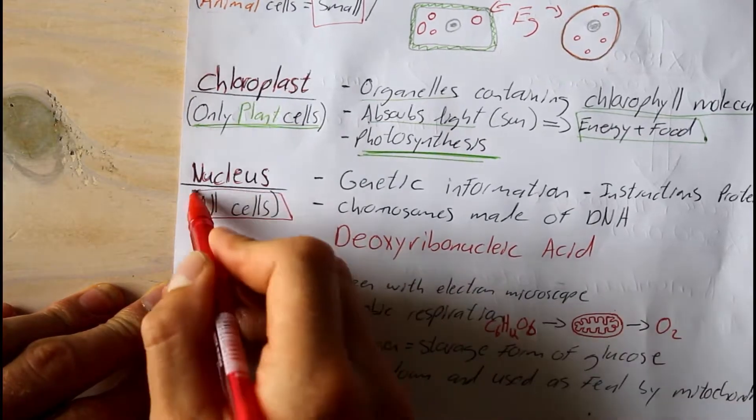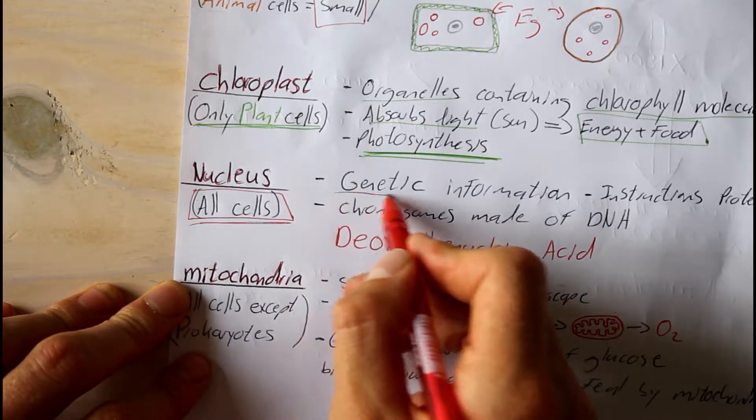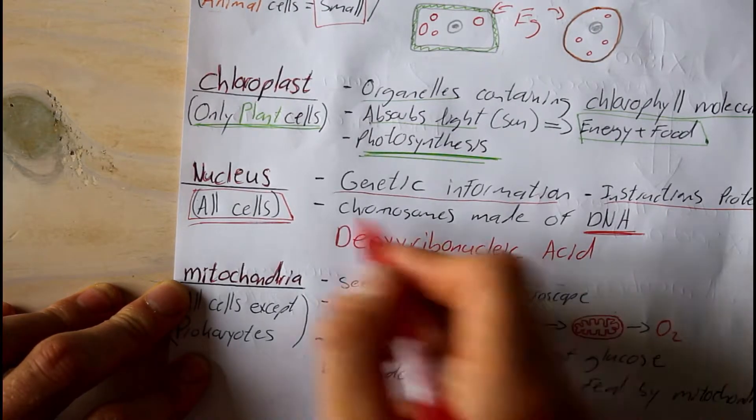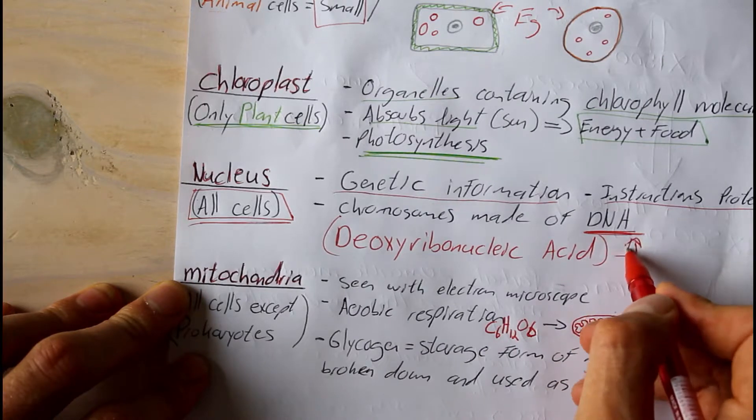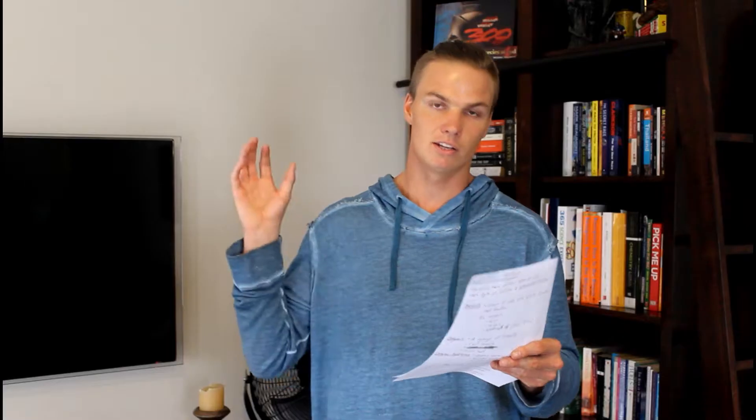One of the most important organelles in the cell is the nucleus. All cells have a nucleus — a cell cannot not have a nucleus. The nucleus contains the genetic information, and it has the instructions for the cell's metabolic processes: to make proteins, to excrete substances — everything that goes on within the cell is controlled by the nucleus. The genetic material in the nucleus is held in chromosomes, and the chromosomes are made up of DNA, which stands for deoxyribonucleic acid.